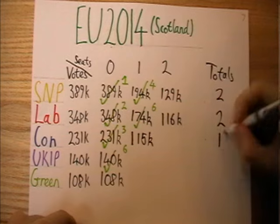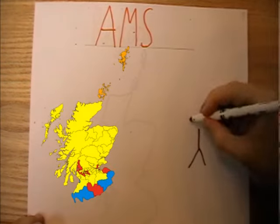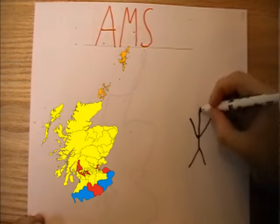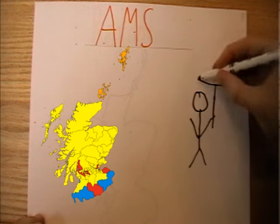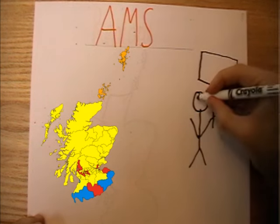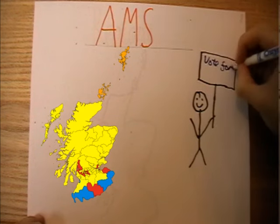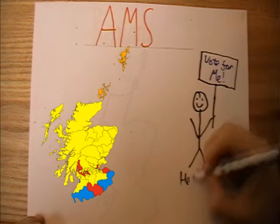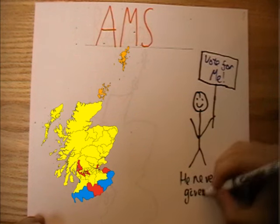So now we can actually chat about the Additional Member System. As I said earlier, it's a hybrid system, and the 129 members of the Scottish Parliament are split between constituencies and regions. There are 73 constituencies, which each elect a single MSP using the First Past the Post system — the simple winner-take-all method.